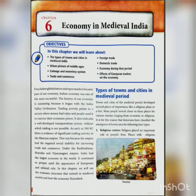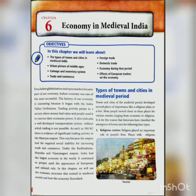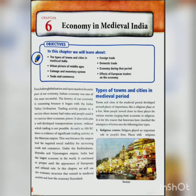First of all, we are going to see the types of towns and cities in the medieval period. Many types of towns and cities existed in India. Some places were important as religious centers, some as administrative centers, some as capital cities, and some as military centers. Historians classified the emergence of towns and cities into four types: religious, administrative, military, and trading centers.